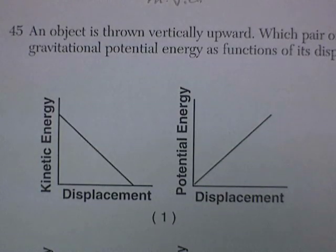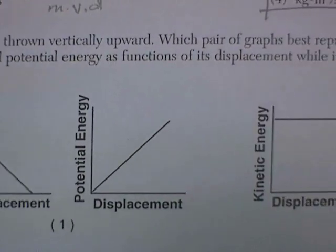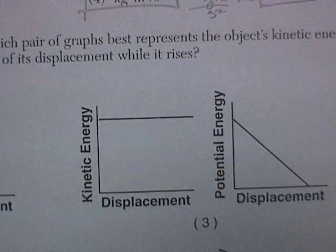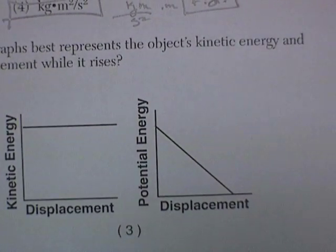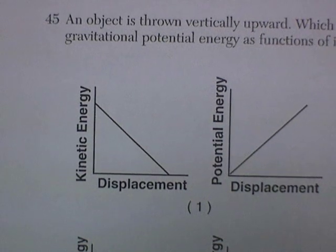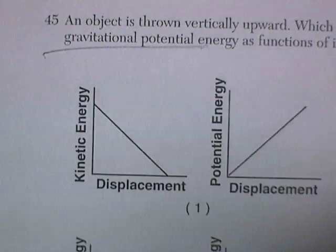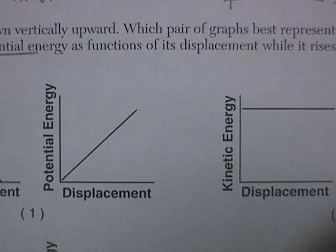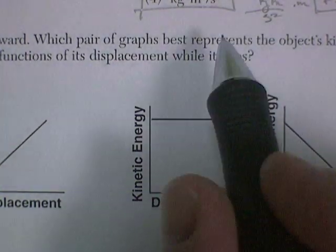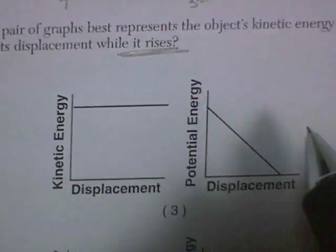Question 45. An object is thrown vertically upward. Which pair of graphs best represent the object's kinetic energy and gravitational potential energy as a function of its displacement while it rises?